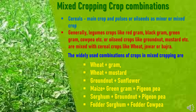There are various crop combinations in mixed cropping. Usually cereals are grown as the main crop and pulses or oilseeds are grown as the minor or mixed crop. Legume crops like red gram, black gram, green gram, cowpea, or oilseed crops like groundnut and mustard are mixed with cereal crops like wheat, jowar, or bajra. Widely used combinations include wheat with gram, wheat with mustard, groundnut with sunflower, maize with green gram and pigeon pea, sorghum with groundnut and pigeon pea, and fodder sorghum with fodder cowpea.